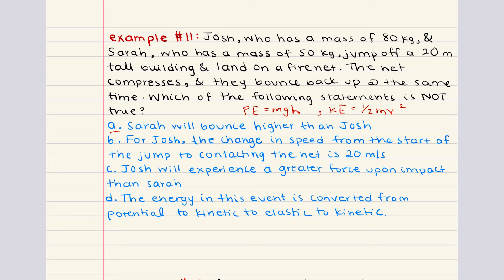Statement A says Sarah will bounce higher than Josh. This statement is not true. The height to which they bounce depends on the energy stored in the net, which is related to the energy they brought into the system. Since both jumped from the same height, their initial potential energies differ due to different masses. Josh, having more mass, had more potential energy at the start and thus more energy stored in the net. Therefore, Josh should bounce higher than Sarah — not the other way around. This makes A the correct answer since it is the statement that is not true.